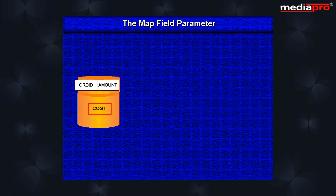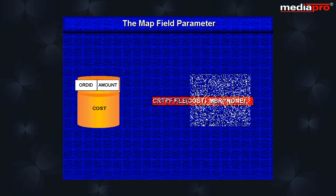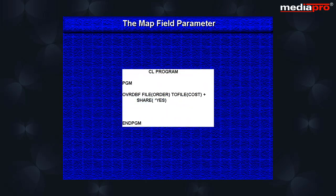The cost physical file can be created with the members parameter set to none as it will not contain any data records. Our application program must be written to reference the cost file. Before calling the application program, we use the override database file command to override the cost file with the order file that contains the actual data and also set the share parameter to star yes.